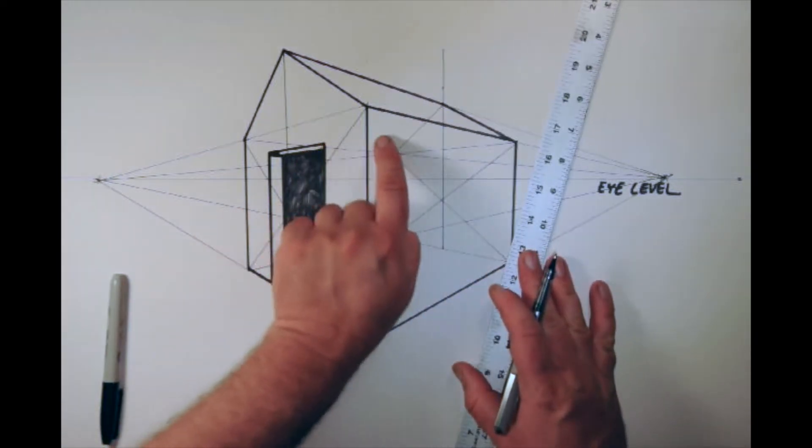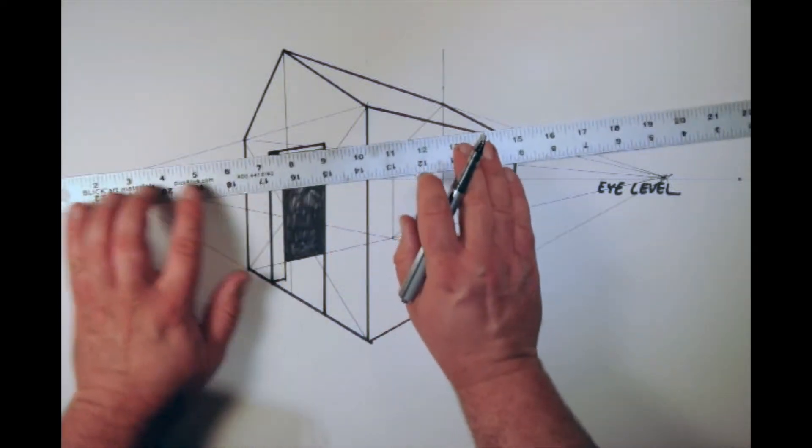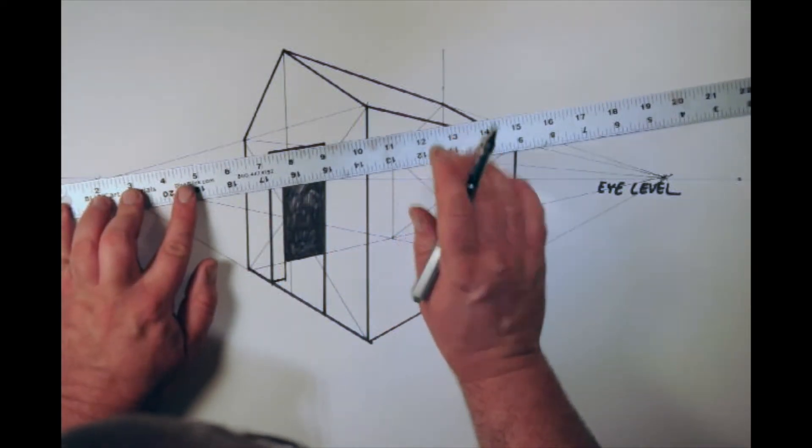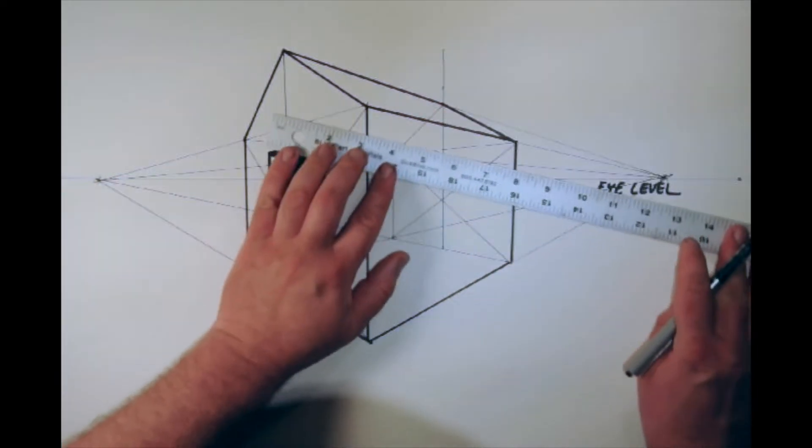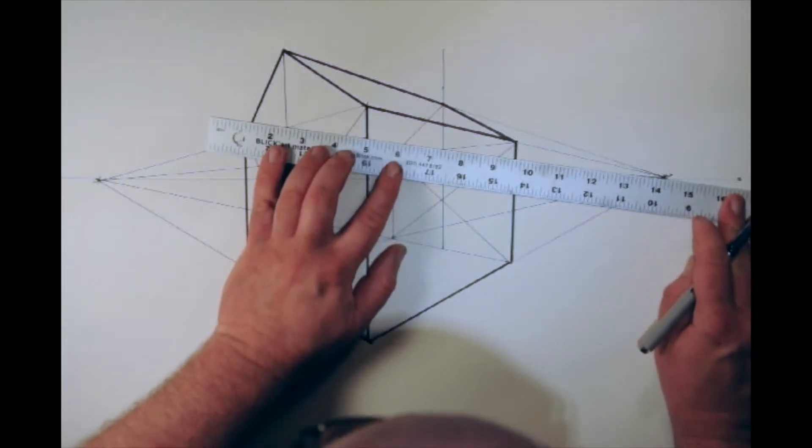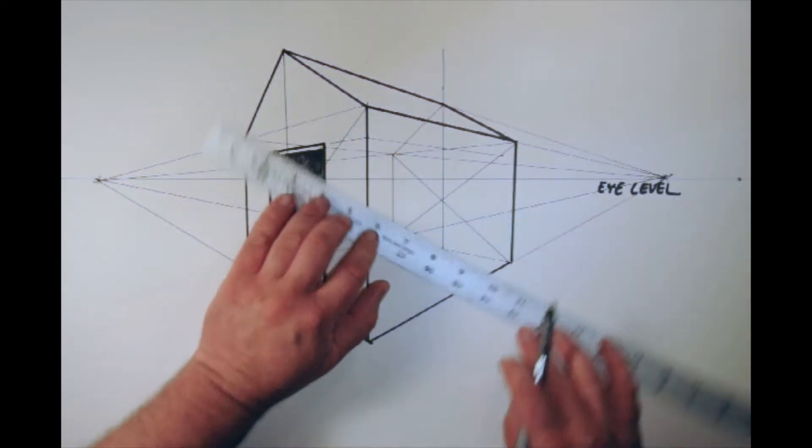If I want to line the window up with the top of the doorway, one way to do that is to carry this line over to that point. And then I can use that as a guide for the top of my window.